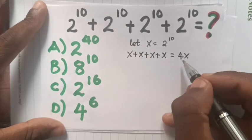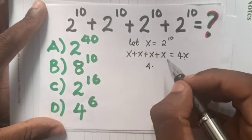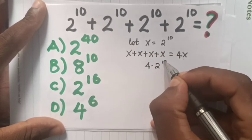We know that x is equal to 2 power 10, so it will be 4 times 2 power 10. Then, we simplify 4.